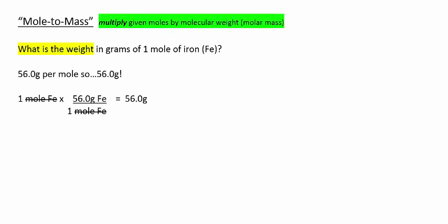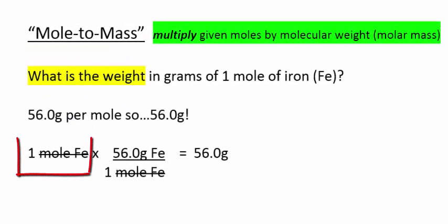Now, as simple as that was, it's important to show you the calculation behind it. Multiply the given moles by the molar mass. So one mole times the fraction 56 grams of iron per one mole of iron. I set this up in the format of dimensional analysis so you could see the cancellation of the units.